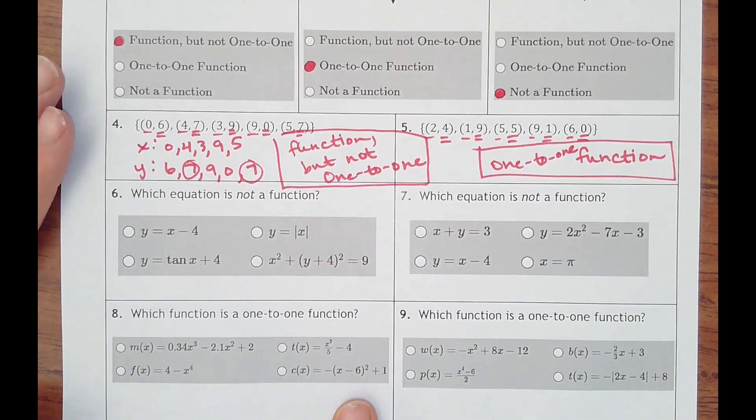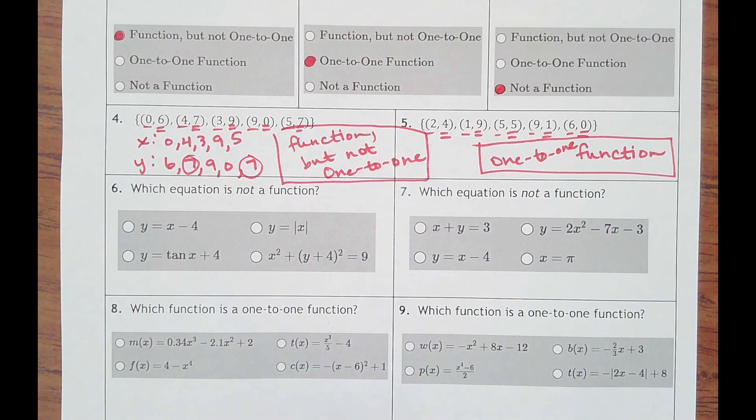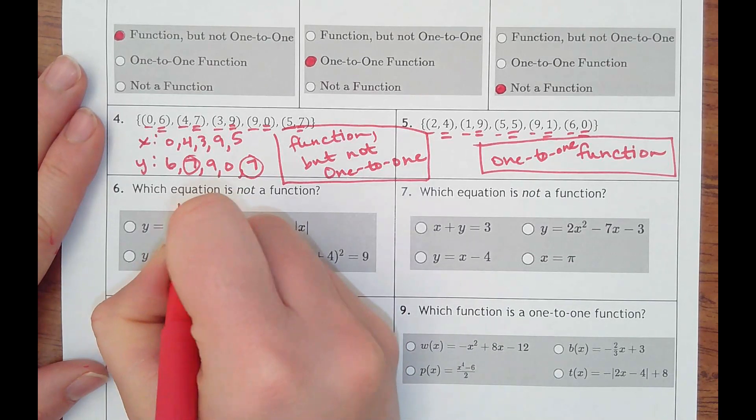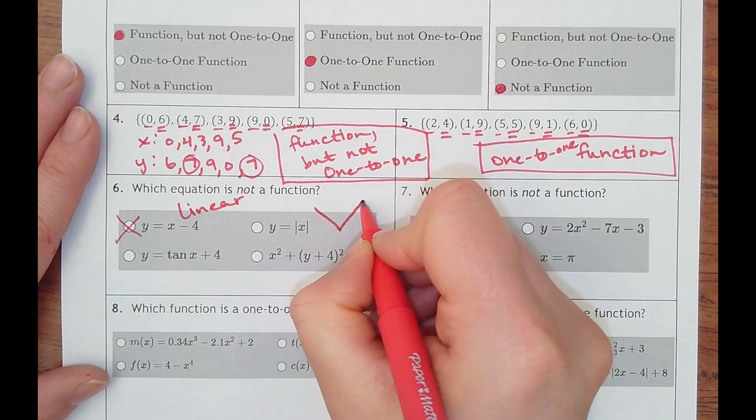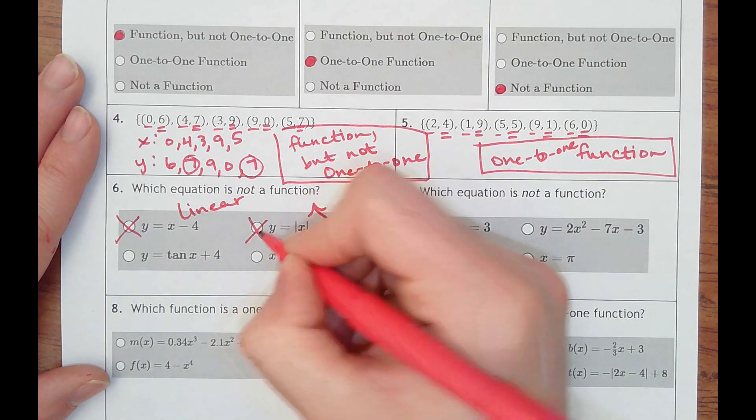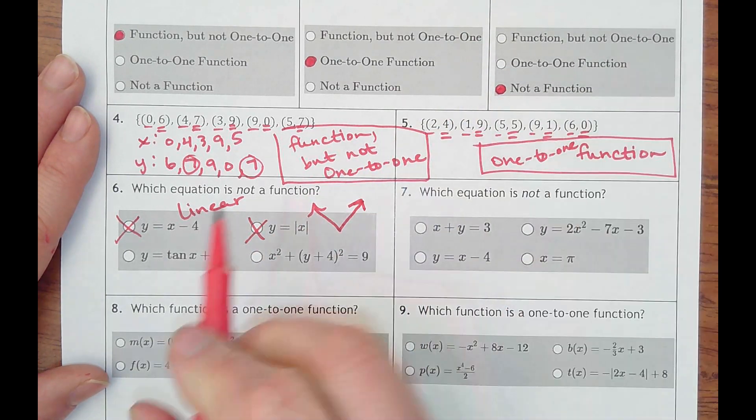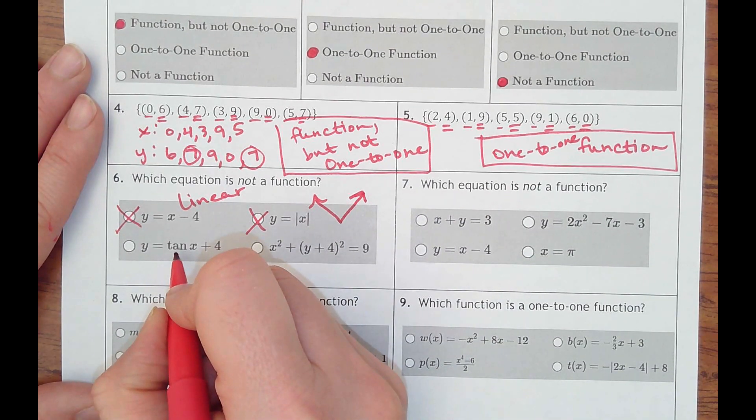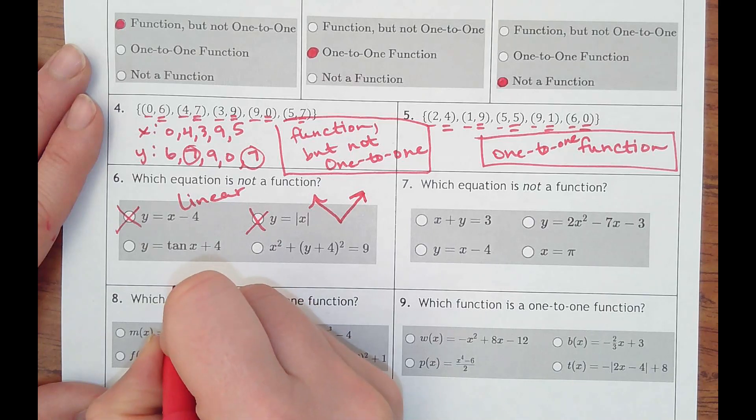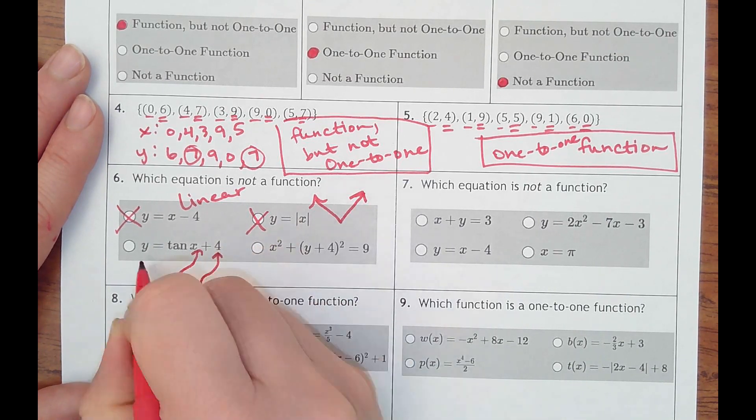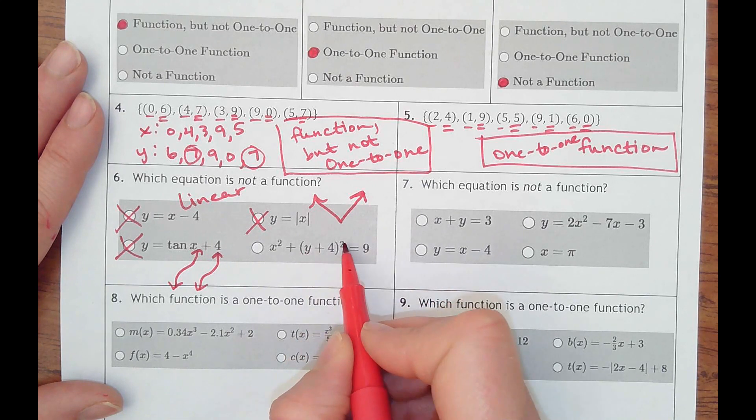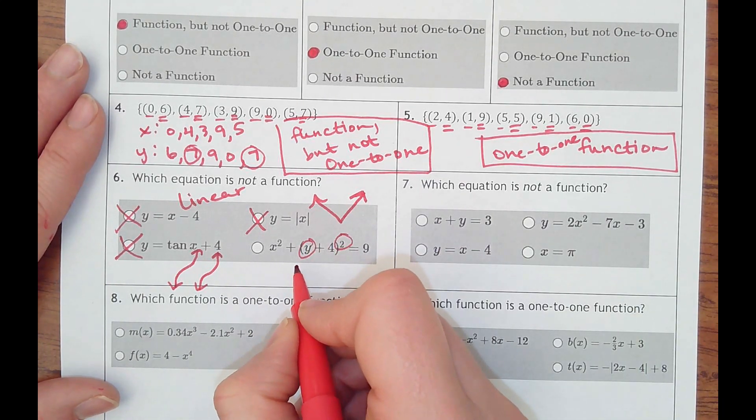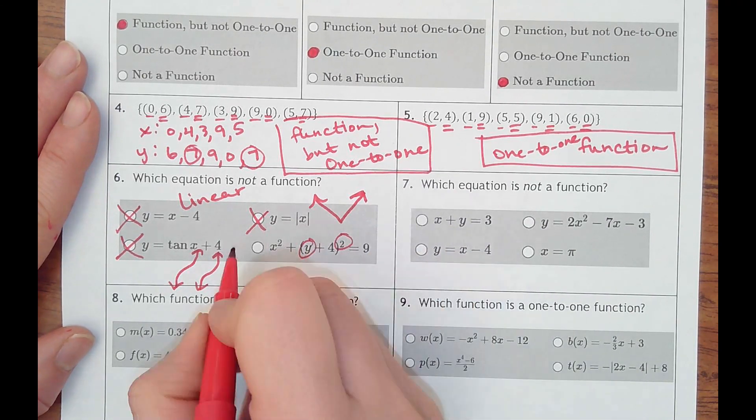Number 6. We've got to think about what the shapes of these equations look like. You also could graph them. But we know any linear equation is a function. So it's not that one, which is not. Absolute value makes a v-shape. You can look at my posters on my wall. That is a function. Passes the vertical line. That's all we'll worry about. Tangent of x, you've never seen. But all sine, cosine, tangent functions, they're a function. They make some kind of curve like this that repeats over and over. That is a function. This is not a function. You can't even get y equals out of this, because you have y being squared. That is going to make some kind of circle. And that is actually a circle equation there. So that is the one that is not.